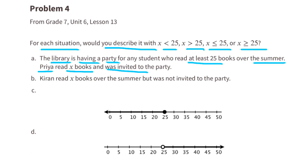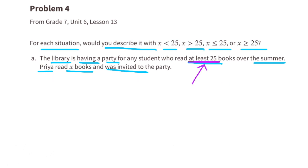Option A: The library is having a party for any student who read at least 25 books over the summer. Priya read x books and was invited to the party. In order to be invited, she would have had to read at least 25 books — meaning the number of books she read was either equal to 25 or greater than 25. So we use x is greater than or equal to 25.